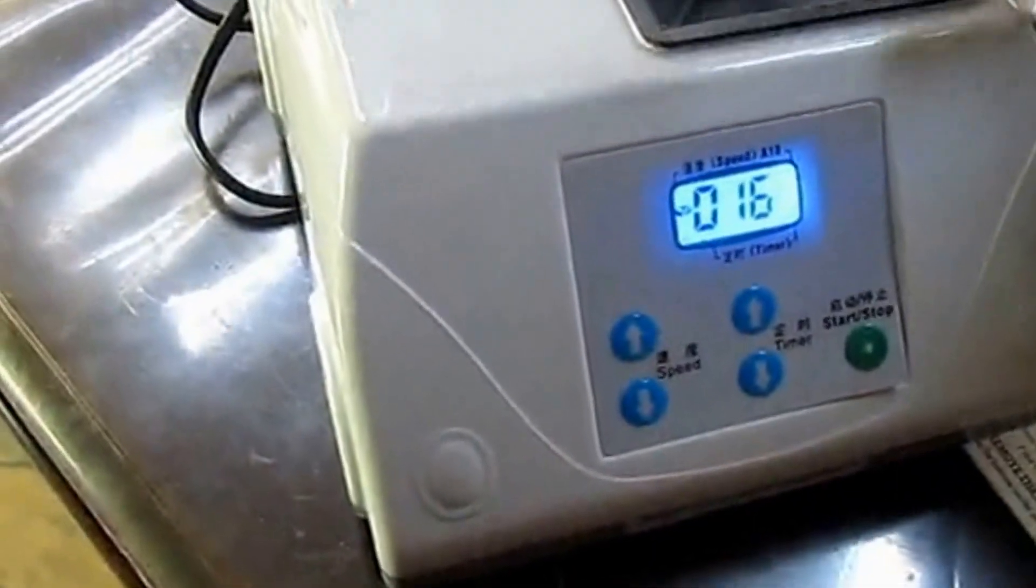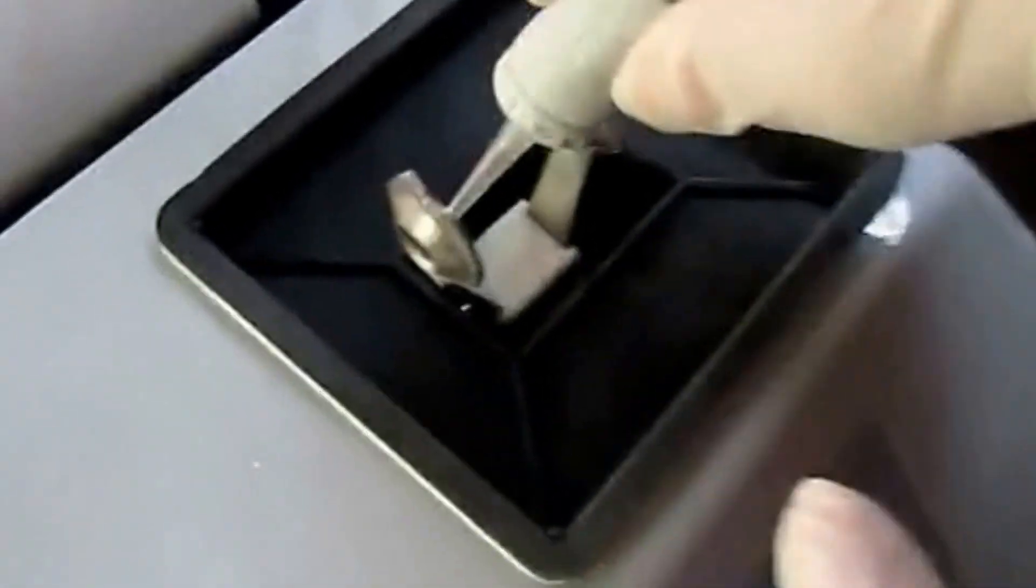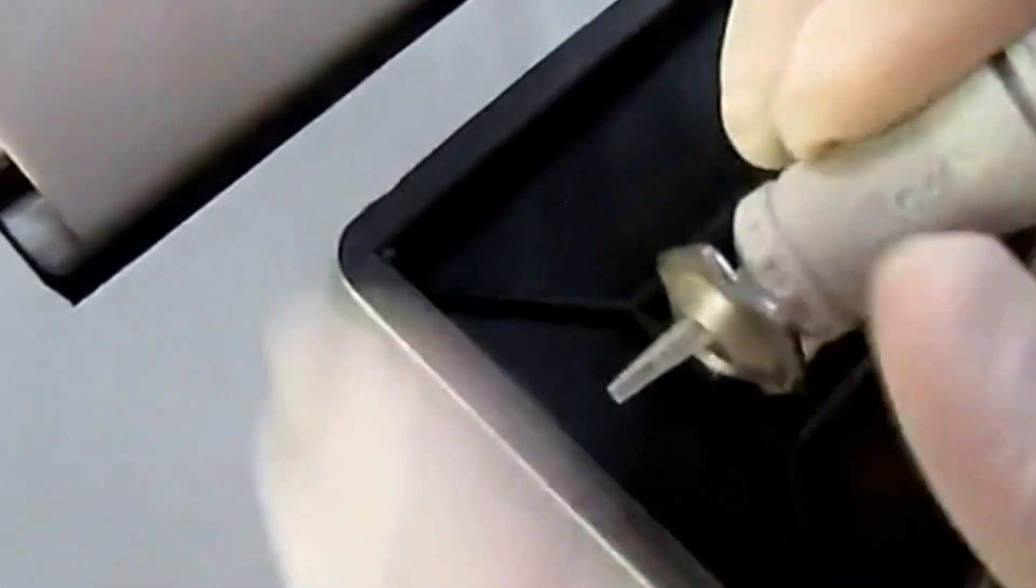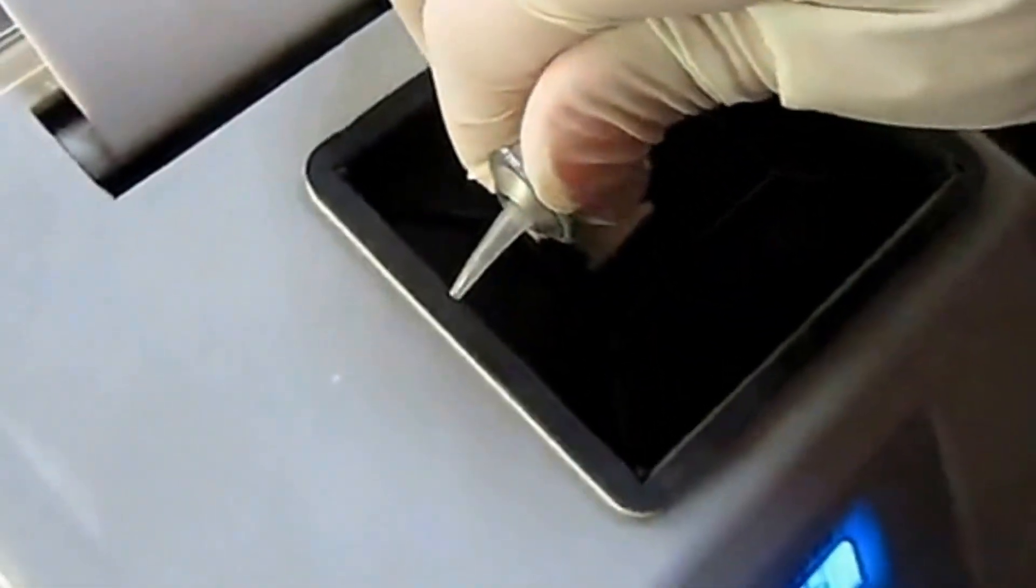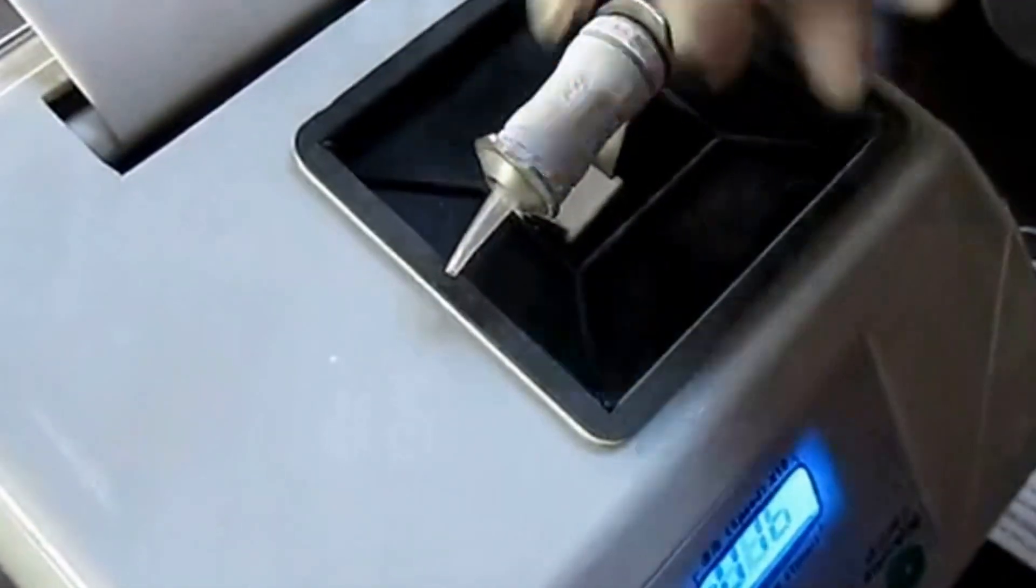Please follow the steps to load the glass ionomer or amalgam capsules. For glass ionomer capsules, place the capsule with the tail pointing downward when putting it in the amalgamator.